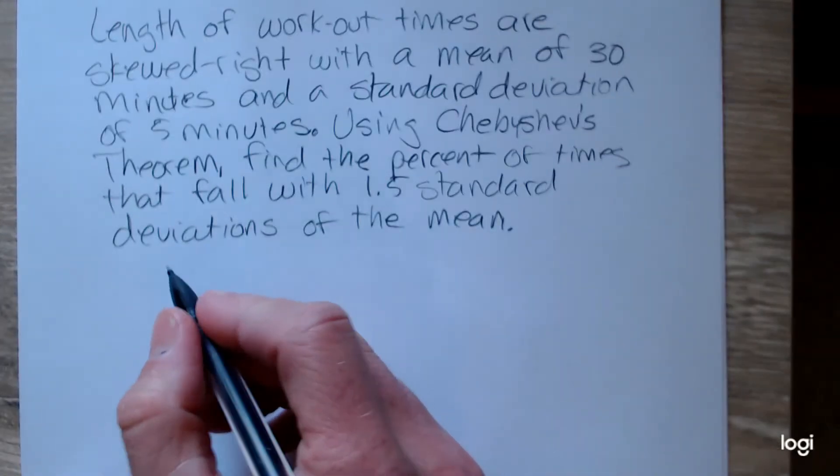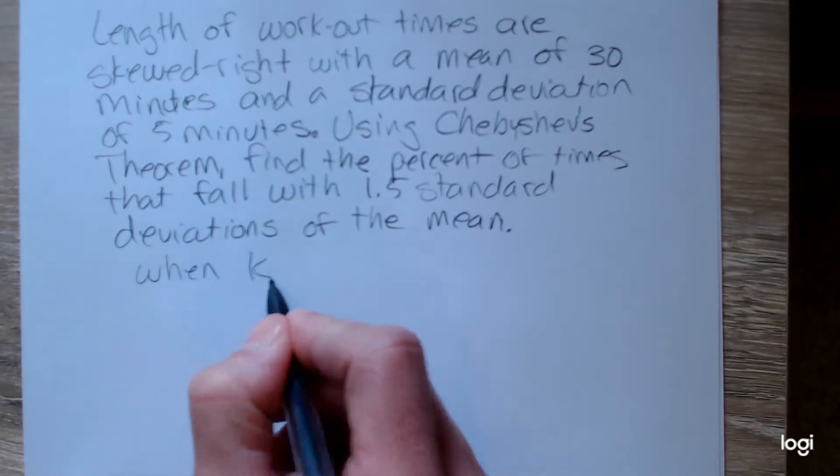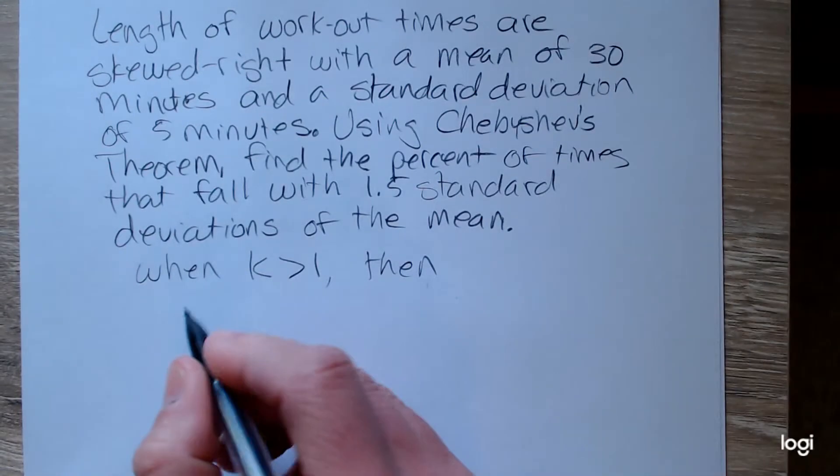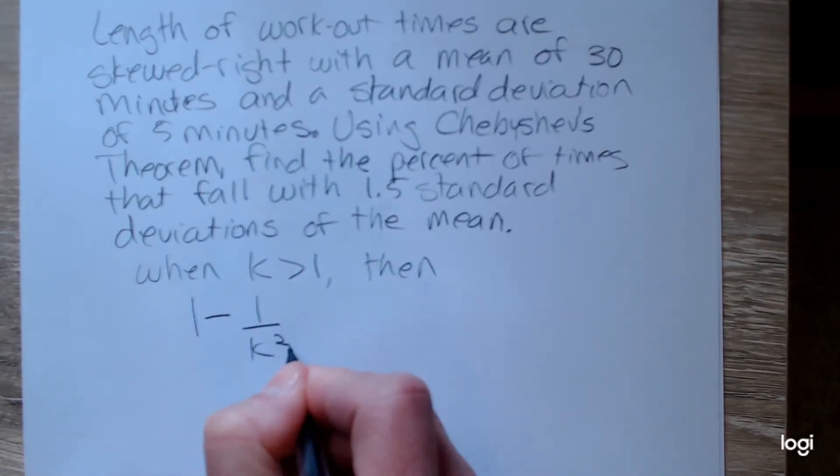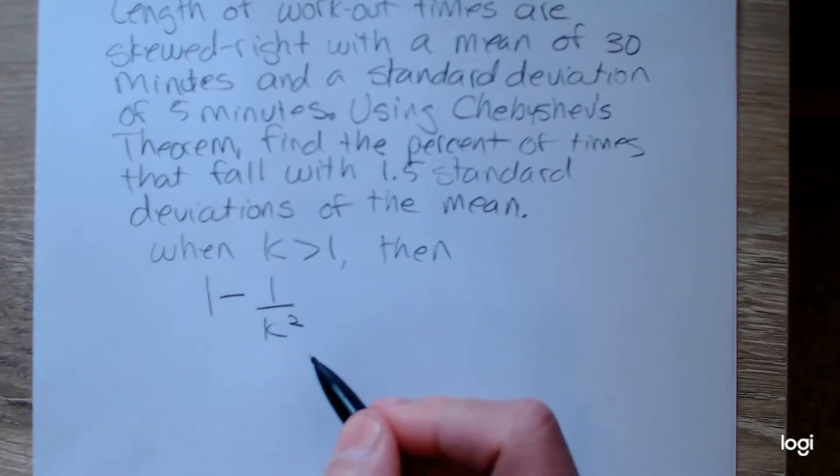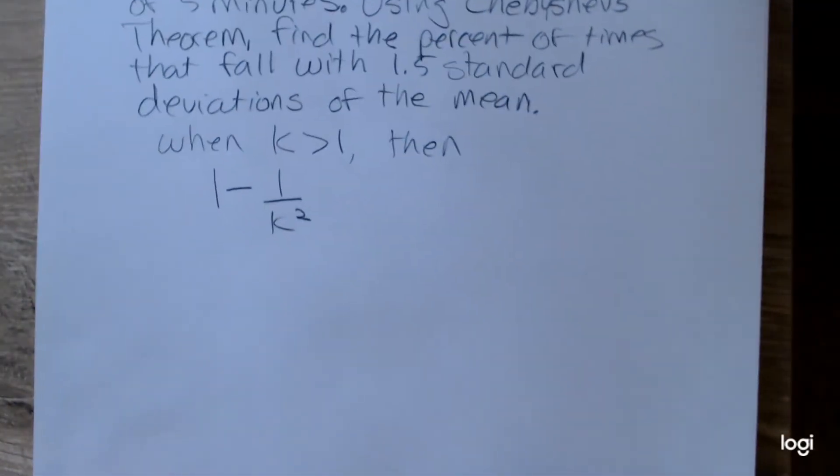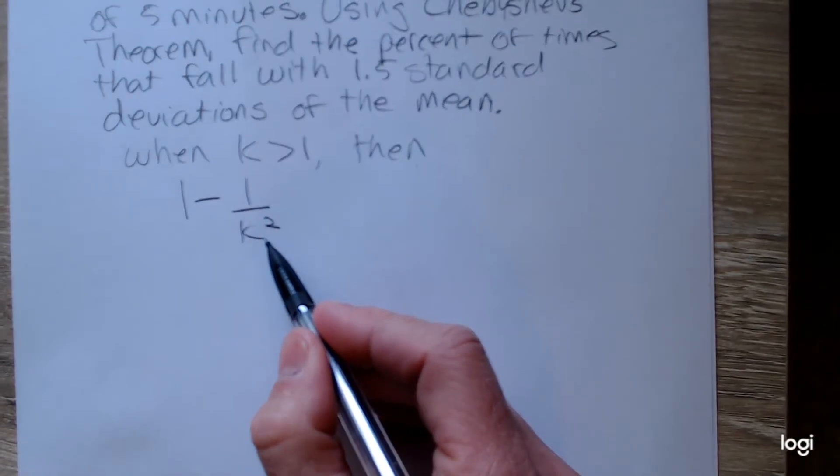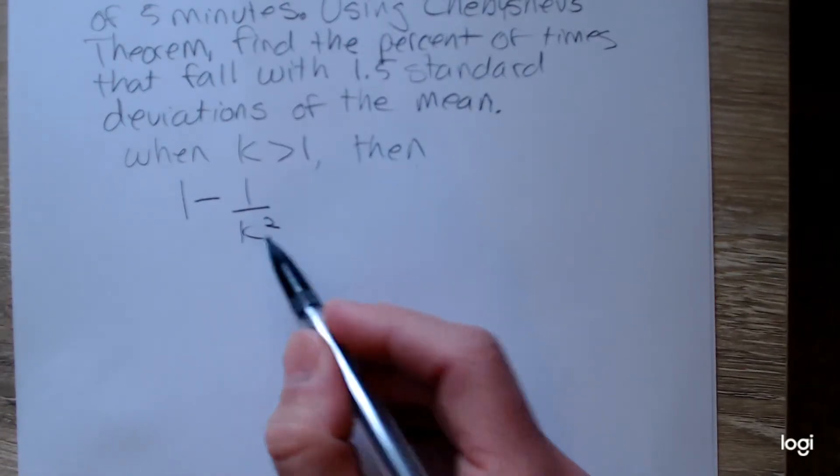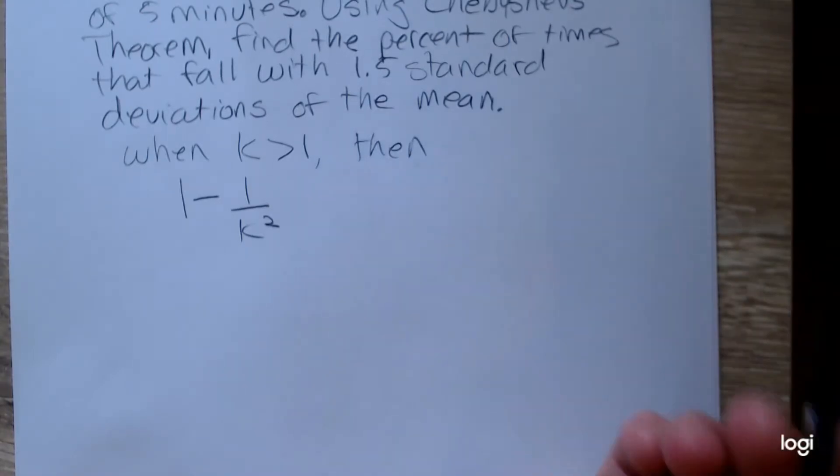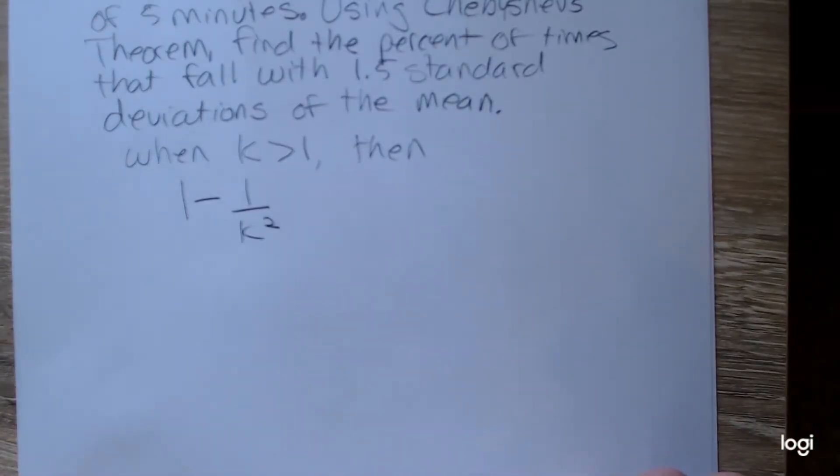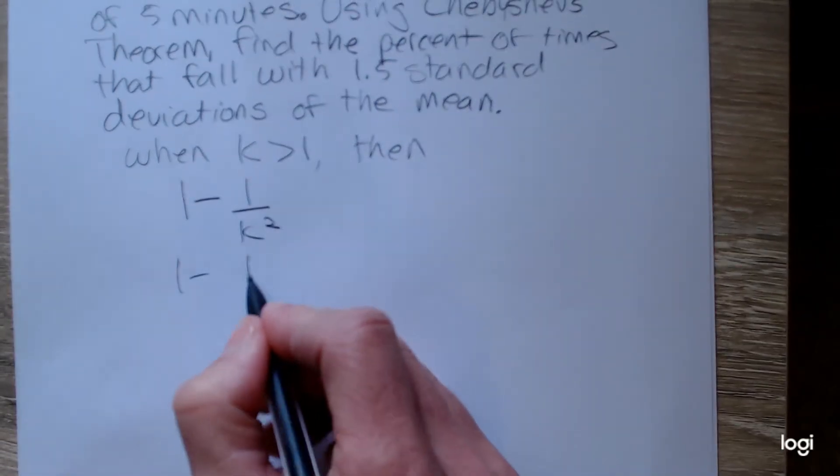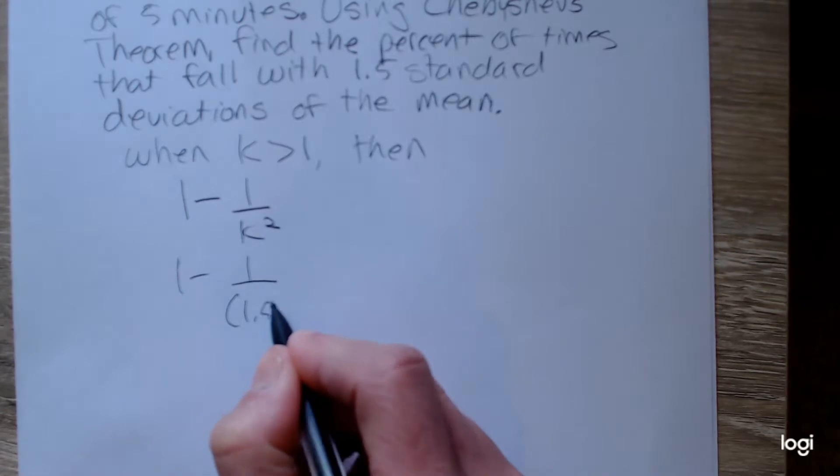When k is greater than 1, then 1 minus 1 over k squared gives us the amount of data that falls within k standard deviations of the mean, where k is the number of standard deviations. We're told that k is equal to 1.5 standard deviations, so we're going to plug that in. So, 1 minus 1 over 1.5 squared.